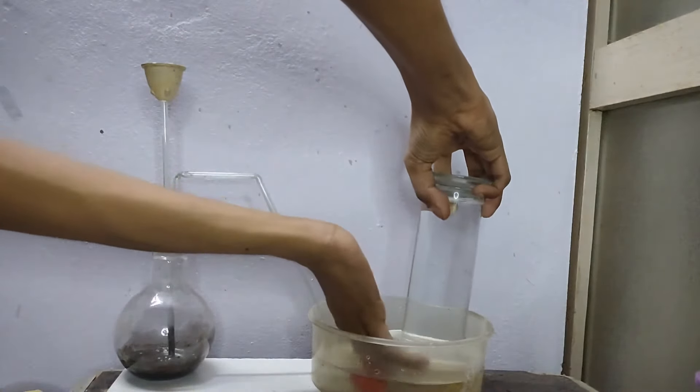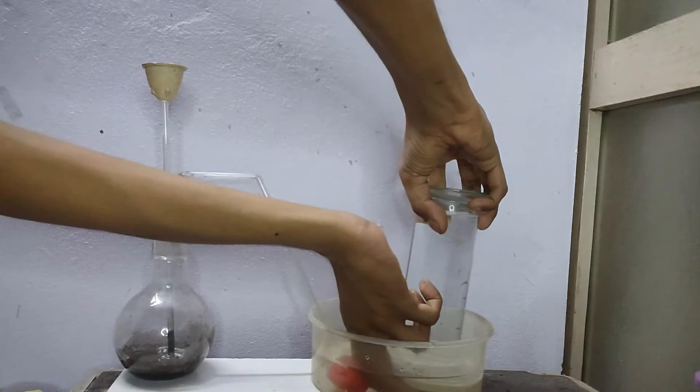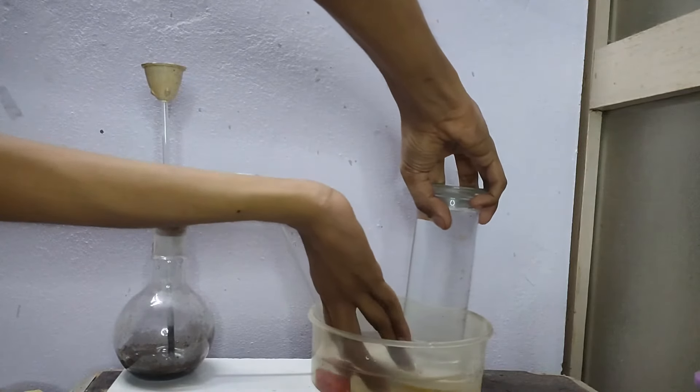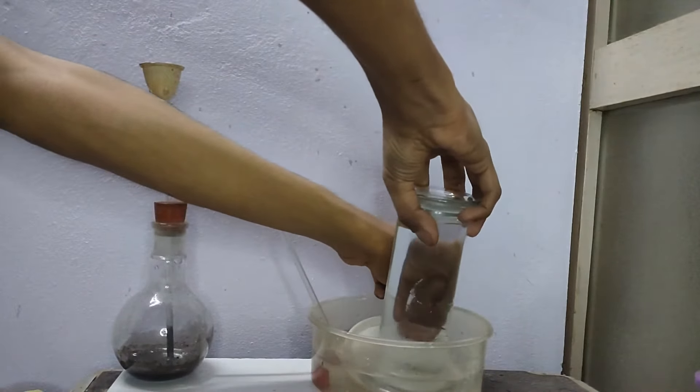This is mostly air. So first we let some bubbles go out and then place the gas jar on top of the beehive shelf to collect our oxygen by downward displacement of water.